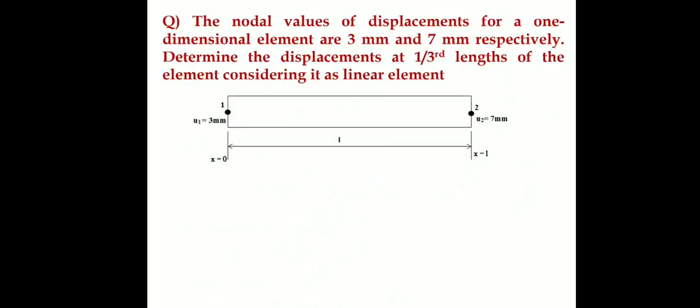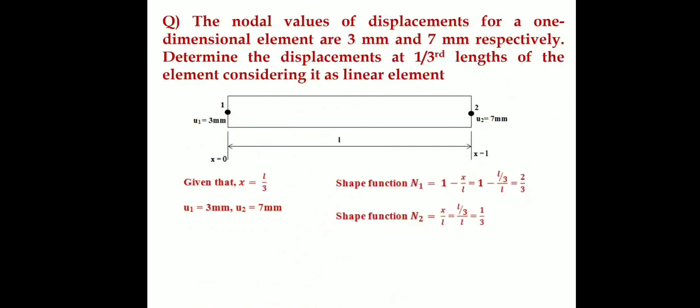Given: u1 = 3 mm, u2 = 7 mm. We want displacement at x = L/3. Substituting x = L/3 into the shape functions N1 = 1 - x/L and N2 = x/L, we get N1 = 1 - 1/3 = 2/3, and N2 = 1/3.